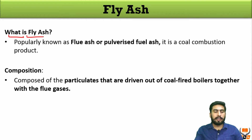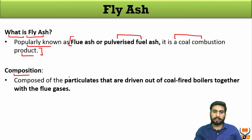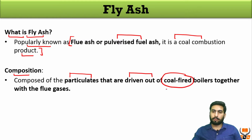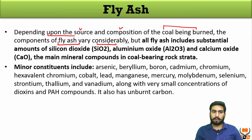Fly ash is also known as pulverized flue ash, and it is a coal combustion product. It is composed of particulates that are driven out of coal-fired boilers together with the flue gases. Depending upon the source and the composition of the coal being burned, the composition of fly ash varies considerably.